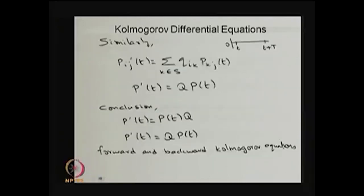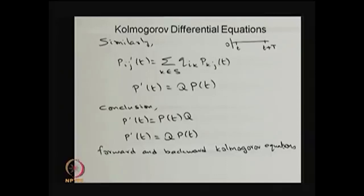Similarly, if you consider the small interval first and then t to t plus capital T, you get P'(t) equals Q times P(t), which is called the backward Kolmogorov differential equation. Whether you use the forward or backward Kolmogorov equation, solving it gives you p_ij(t).